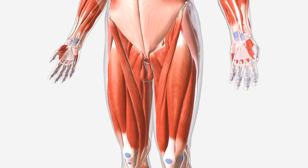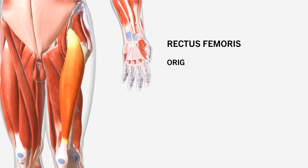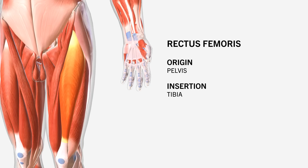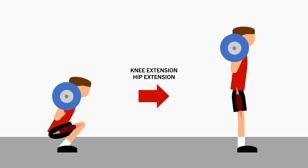An example of this theory when it comes to lifting is the rectus femoris, the large middle quad muscle. The other three quad muscles originate on the femur, but the rectus femoris originates on the pelvis, and like the other quad muscles, it inserts on the tibia. So not only does it perform knee extension, it also performs hip flexion. During any squat pattern, the knees extend but the hips extend too, meaning the rectus femoris is shortening at the knee but lengthening at the hip. Because it performs two opposing muscle actions, it isn't going to be maximally recruited and trained.